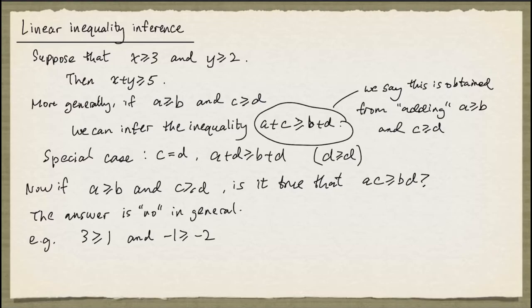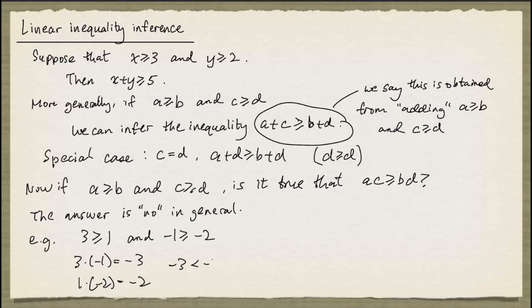But if we multiply 3 and negative 1, we get negative 3. And if we multiply 1 and negative 2, then we get negative 2. But negative 3 is less than negative 2. So try not to make the mistake of multiplying inequalities. It doesn't work in general.